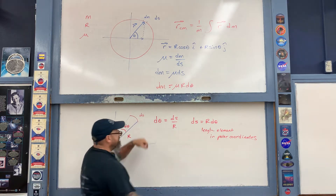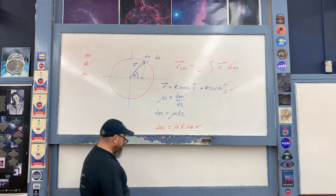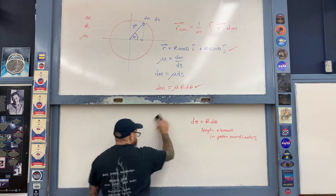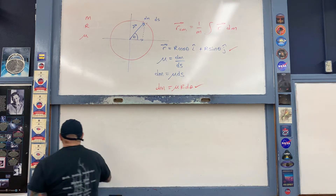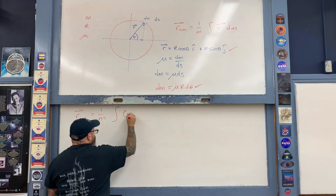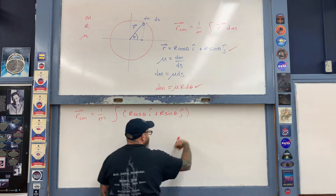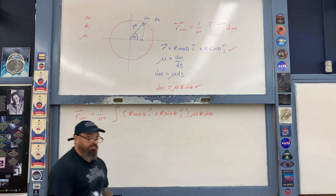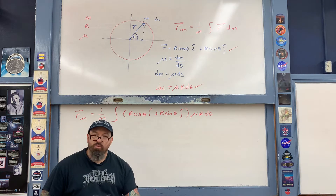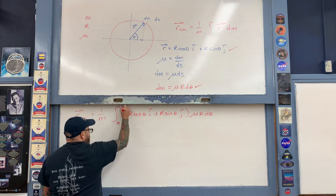Now I have everything I need — the dm and the position vector r. Let's plug everything into the integral. The position of the center of mass is one over the total mass times the integral of r dm. The variable being integrated over is the angle θ, and since we go all the way around the circle, we integrate from zero to two pi.